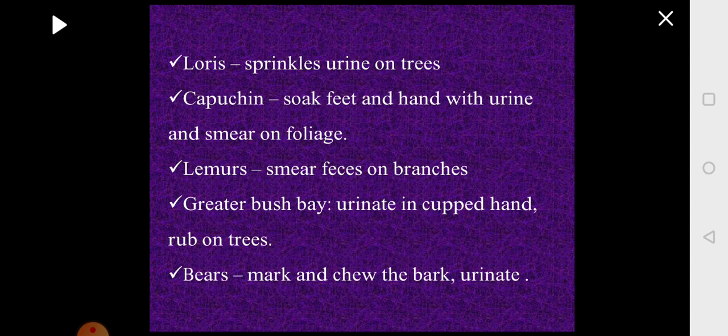The loris, when it urinates, catches the urine and sprinkles it on the tree, marking the territory. Capuchin soaks its feet and hands in urine and smears them on the leaves of the tree to mark the territory. In lemurs, they defecate, take the feces, and smear it on branches as though painting them to mark the territory. In greater bush baby, when urinating it cups its hand, collects the urine, and rubs it on trees to mark the territory.